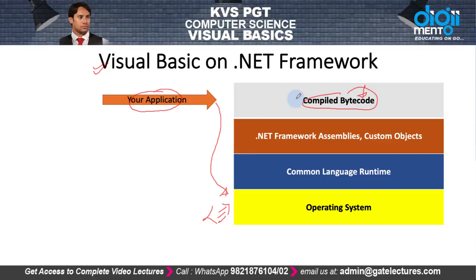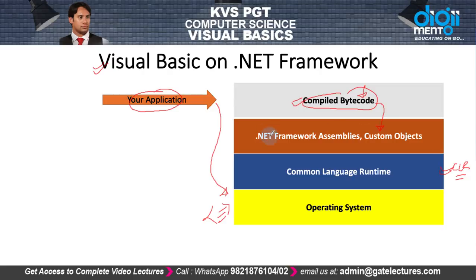Instead you get bytecode, and this bytecode needs the help of the .NET framework assemblies — for example, the Common Language Runtime (CLR). CLR acts as the intermediary here. This is the stack of components responsible for running Visual Basic applications.